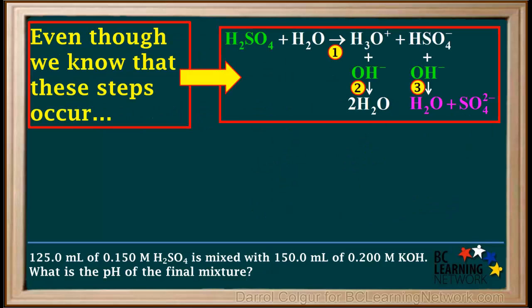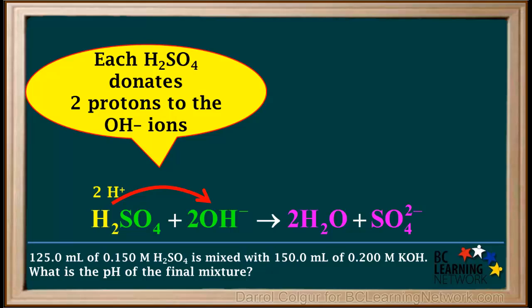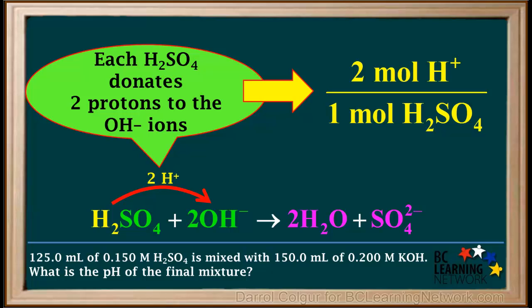Even though we know these three steps occur when we add H2SO4 to water and then add a strong base, we can represent the process with a net overall equation: H2SO4 plus 2 OH minus forms 2 H2O plus SO4 2 minus. So, in the overall net reaction, we see that each H2SO4 donates two protons or H plus ions to hydroxide ions. From this, we can write the conversion factor stating that there are two moles of H plus per one mole of H2SO4. We can use this conversion factor in any calculation where H2SO4 reacts with a strong base.